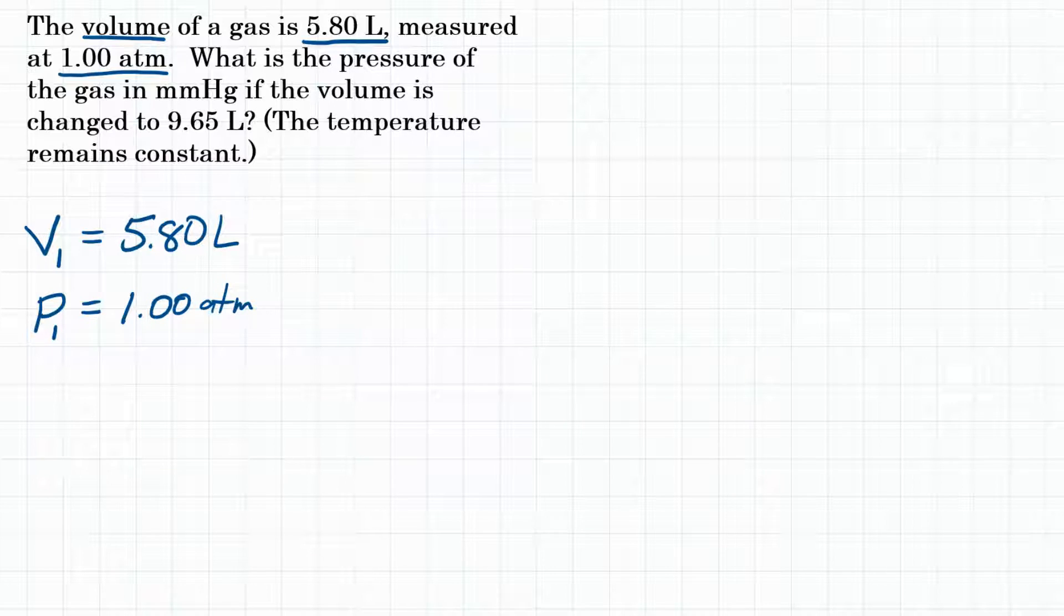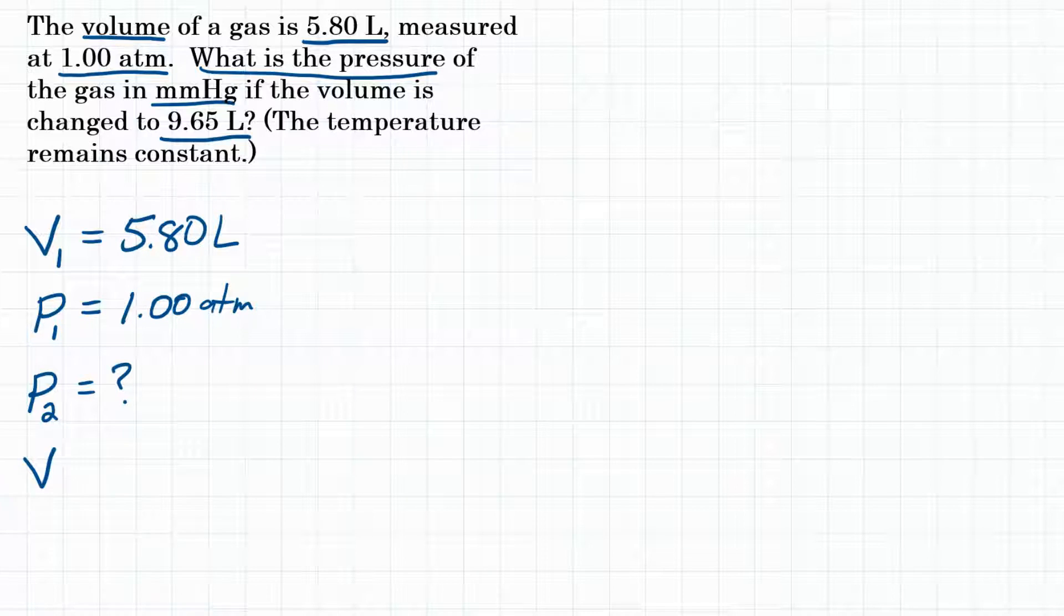What is the pressure? So what is the pressure of the gas in mmHg? So pressure at a different time, let's call that P2. We don't know that. That's what we're solving for. If the volume is changed to 9.65 liters, so at that second time, we have a volume and it increased to 9.65 liters. The temperature remains constant as well.